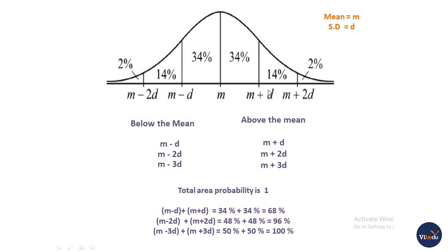This is below the mean. This is above the mean. Below the mean is M-D and M-2D and M-3D. Above the mean is M+D, M+2D, M+3D.